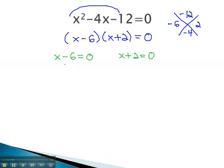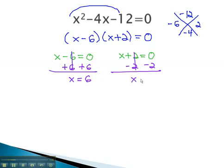We can quickly solve these equations by adding 6 to the first to get x equals 6, and subtracting 2 from the other to get x equals negative 2.